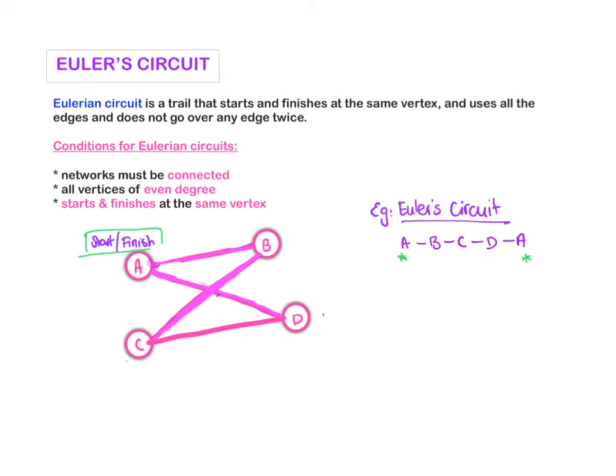Now we're going to look at a Eulerian circuit. You have to remember what a circuit was, and a circuit is when you start and finish at the same vertex. A Eulerian circuit is where you use all the edges and only once. I went from A to B, then B to C, C to D, and then back to A. I've started and finished at A and only gone over each edge once. So that's a Eulerian circuit.